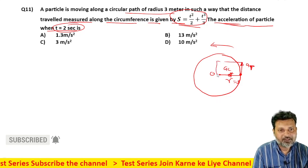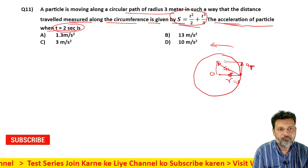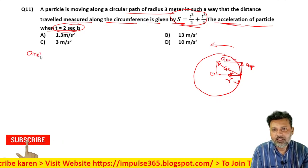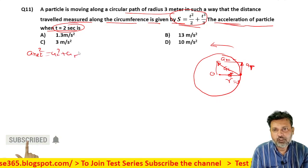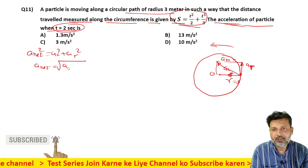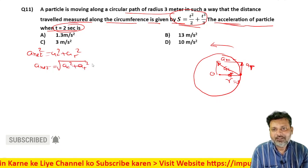The resultant of both will be a net. So what will be the value of a net acceleration? So a net square equals a c square plus a t square, or we can write this as a net equals under root a c square plus a t square.